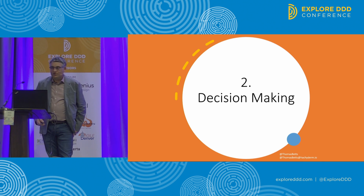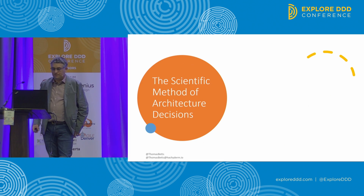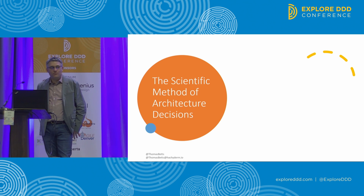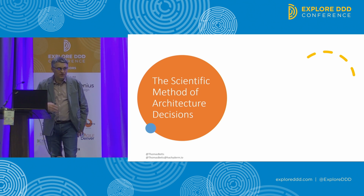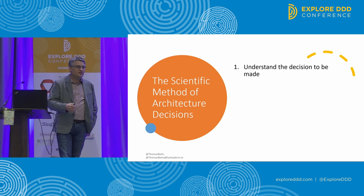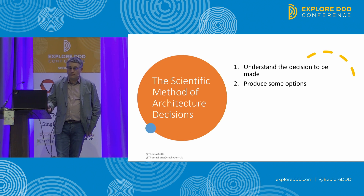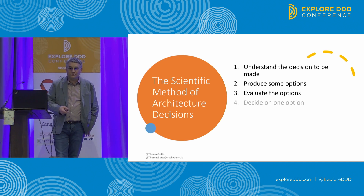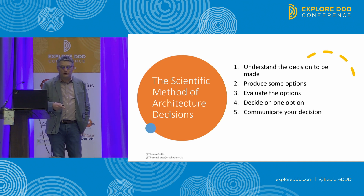Decision-making is the primary responsibility of software architects. When you're making decisions, there's basically a formula you go through — I've thought of it as like the scientific method. It starts with understanding the decision you need to make, then you come up with some options, evaluate those, and decide on one. And once you've done that, you have to communicate your decision.